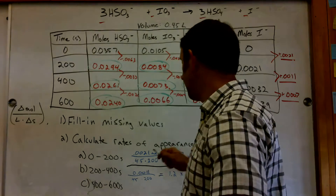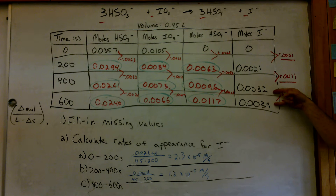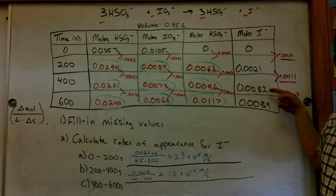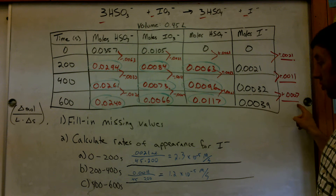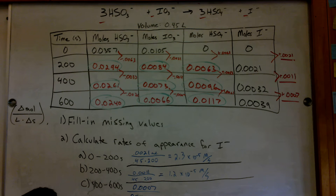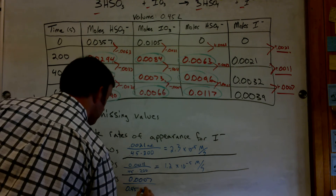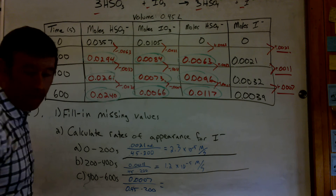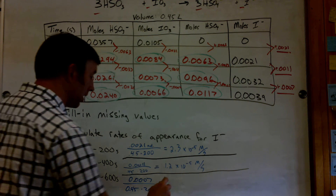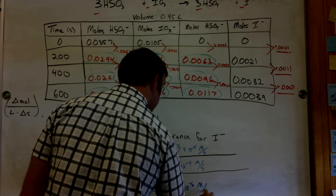And then our last interval: between 400 and 600 seconds. The difference between those iodine values is 0.0007. So I go: 0.0007 over 0.45 times 200 seconds. That calculation gives 7.8 × 10⁻⁶ molarity per second.